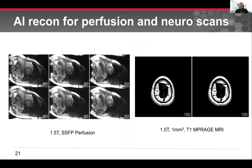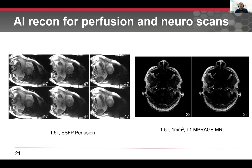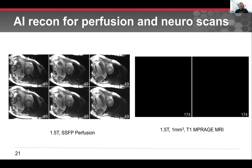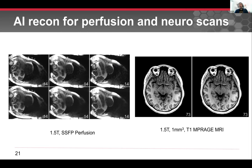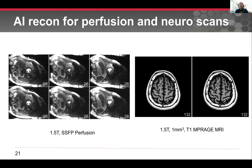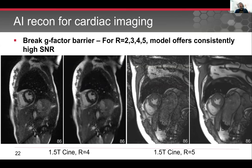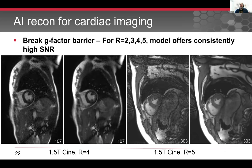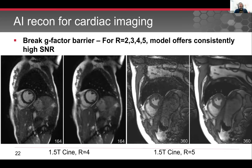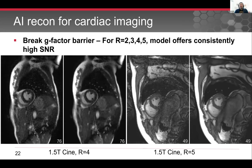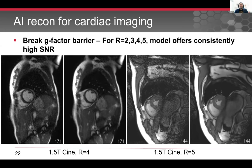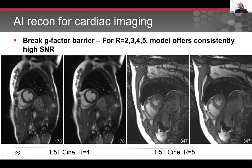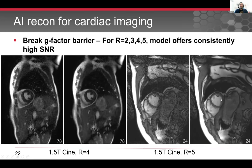Gadgetron enables many new applications. For example, a new set of AI Recon models can significantly improve image quality. The latest development is an AI model that is rather insensitive to acceleration, supporting up to rate 5 acceleration for clinical usage. As shown here, whether data is acquired at rate 4 or rate 5 acceleration, the AI model output image quality remains quite good.